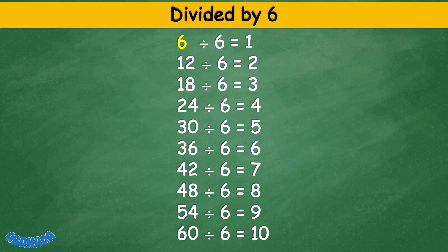Divided by 6: 6 divided by 6 equals 1, 12 divided by 6 equals 2, 18 divided by 6 equals 3, 24 divided by 6 equals 4, 30 divided by 6 equals 5, 36 divided by 6 equals 6, 42 divided by 6 equals 7, 48 divided by 6 equals 8, 54 divided by 6 equals 9, 60 divided by 6 equals 10.